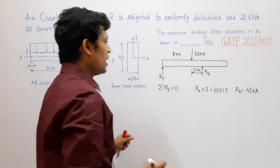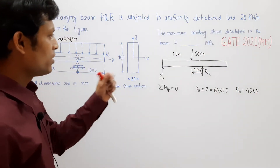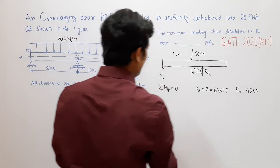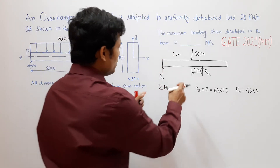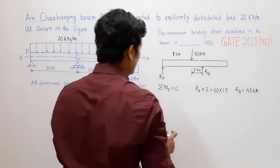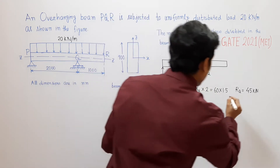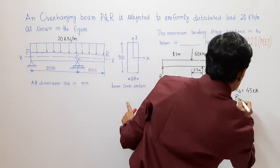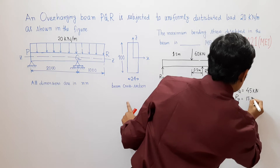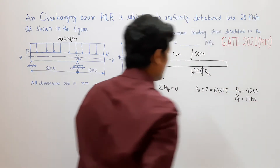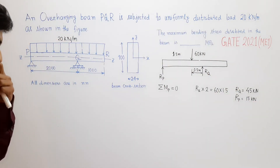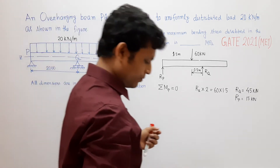From that, RQ equals 90 divided by 2, that is 45 kilonewton. Since RP plus RQ equals 60, RP equals 60 minus 45, which is 15 kilonewton. So we have determined both reaction forces: RP is 15 kilonewton and RQ is 45 kilonewton.